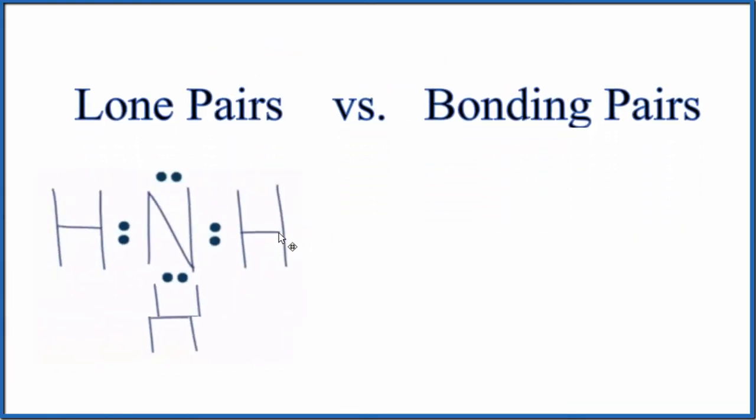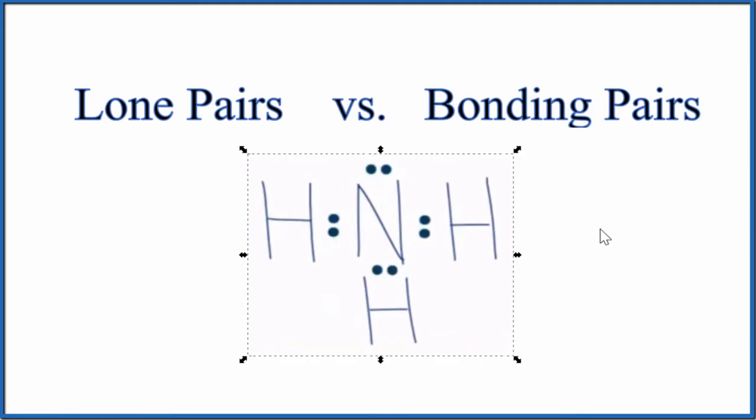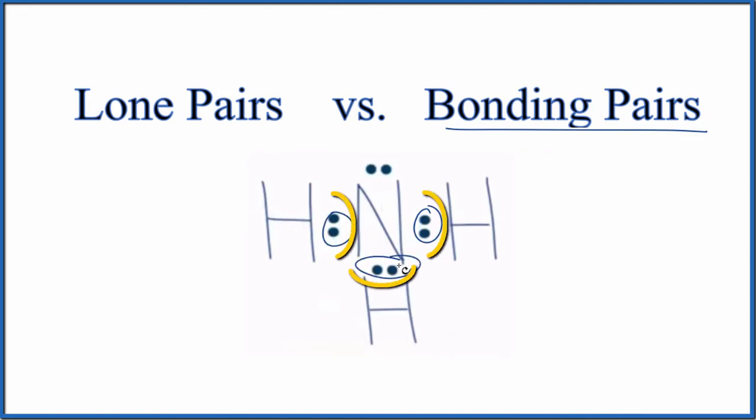So let's start out with ammonia, NH3. The electrons between atoms, those are the chemical bonds right here. These are our chemical bonds, and these are called bonding pairs. So our bonding pair is right here between the atoms.